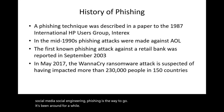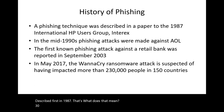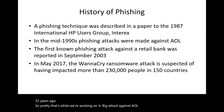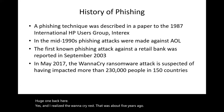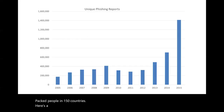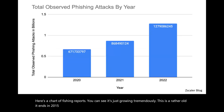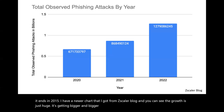Phishing has been around for a while — first described in 1987, about 35 years ago. There was a big attack against AOL back then. The WannaCry ransomware, about five years ago, impacted people in 150 countries. Looking at charts of phishing reports, the growth is just huge and getting bigger — we're talking about 1.28 billion phishing attempts, enormous numbers.